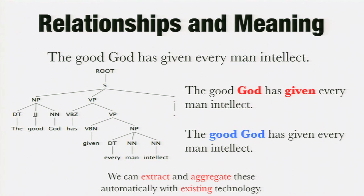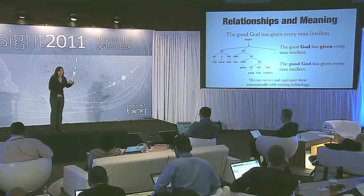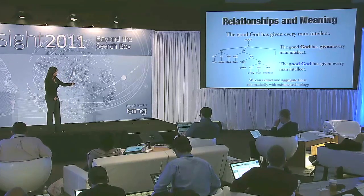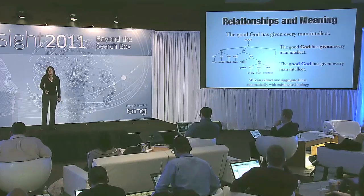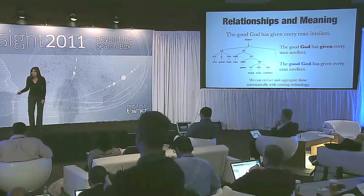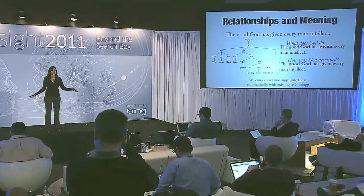For example, here's a sentence that might appear in search results: 'The good God has given every man intellect.' On the left, you see the automatically extracted structure of that sentence. Using this structure, computers can infer really interesting and useful things about relationships between words. In this sentence, a computer can infer that God is the agent doing the giving, and that the adjective 'good' applies to God. In other words, it's actually possible to automatically answer the question of what does God do and how is God described, without a human having to read it.